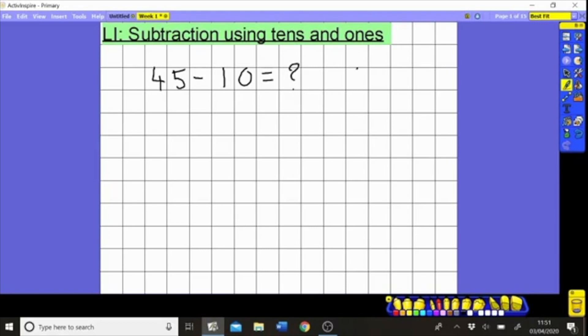First thing we need to know is how many ones are there in 1 ten? We should know this - there are 10 ones in 1 ten. We draw our tens just like this as one line, and these are our ones here. This is our ones, this is our ten.